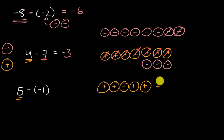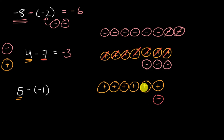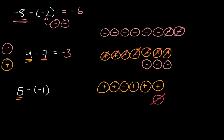So I add one positive number chip and one negative number chip. This quantity is still five because the last two cancel out. The whole reason I added this pair is so I can now take away a negative one — represented by that negative number chip. If I take that away, what am I left with? I'm now left with one, two, three, four, five, six positive number chips — and that's just positive six.